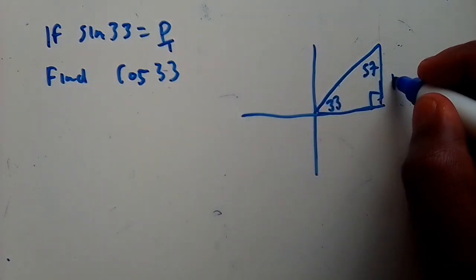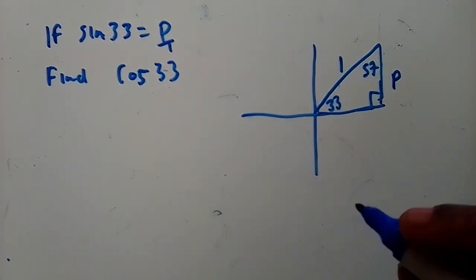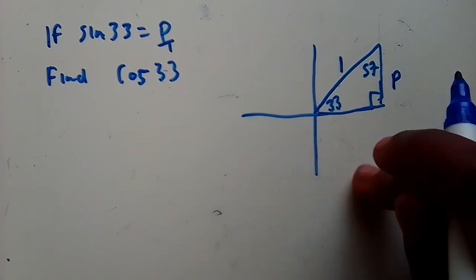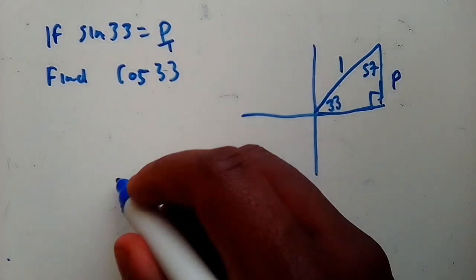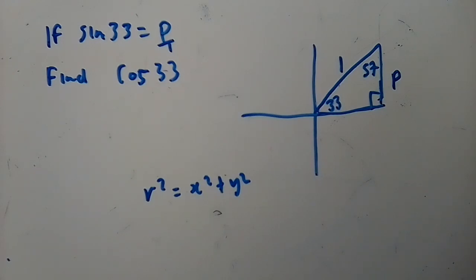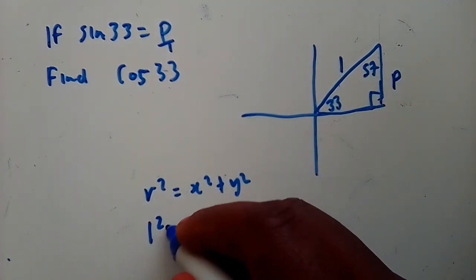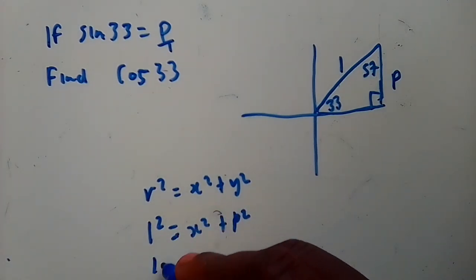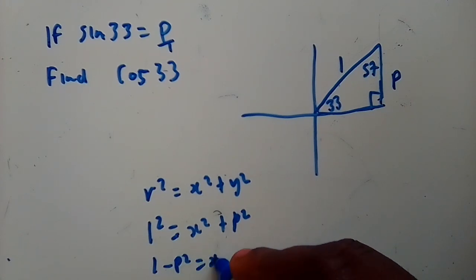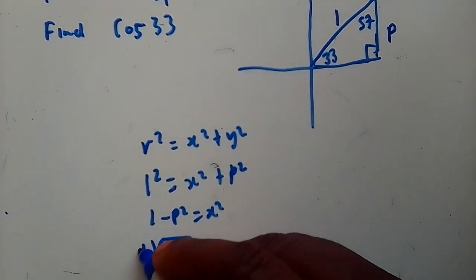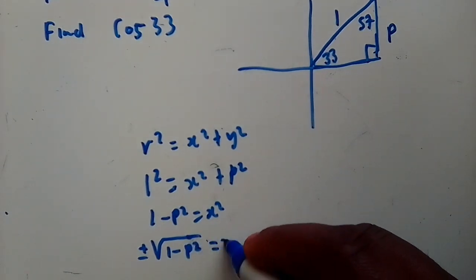Sin is opposite over hypotenuse, so the opposite side is p and the hypotenuse is 1. We need to find the missing side. In trig we say R² = x² + y², so 1² = x² + p², which gives x² = 1 - p². When you square root both sides, always write plus or minus — this is another thing many students miss.